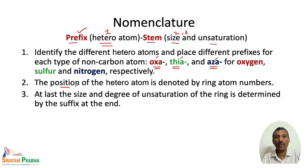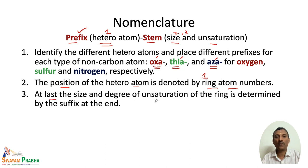The position of the heteroatom is denoted by the ring atom number. If there is only one heteroatom, numbering starts from that heteroatom, giving it the lowest number — position 1. The rest of the compound is named based on the heteroatom present. Finally, the size and degree of unsaturation of the ring are determined by the suffix at the end.